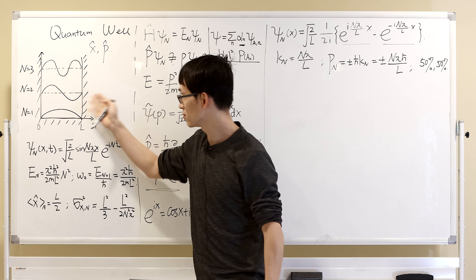So if you want to know: if I measure momentum, what are the possible results and their probabilities? The simplest way to do this is to do a Fourier transform. We're not going to go through that because it's just pure mathematics.